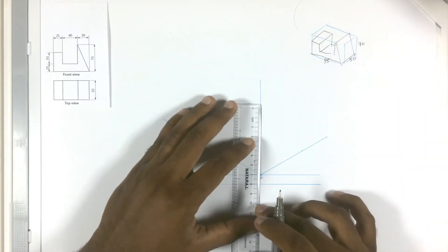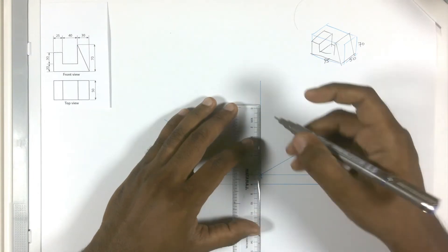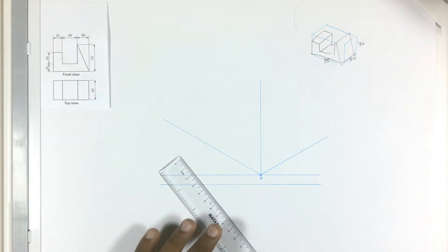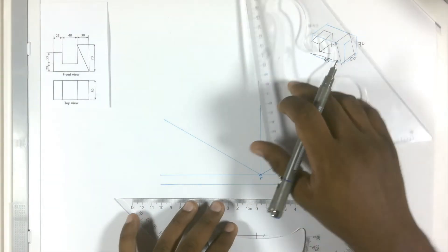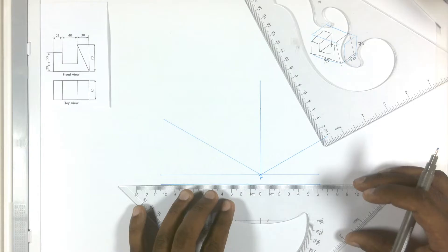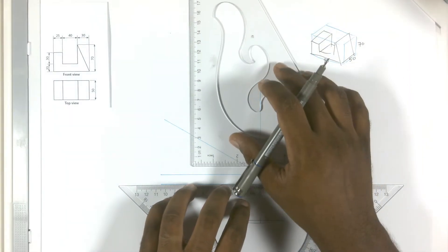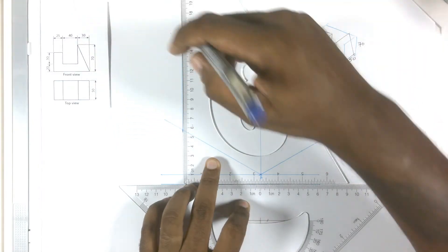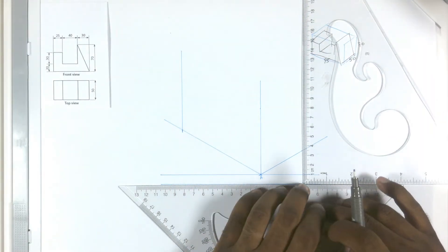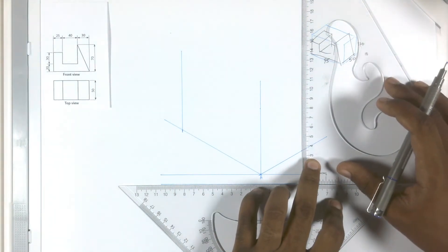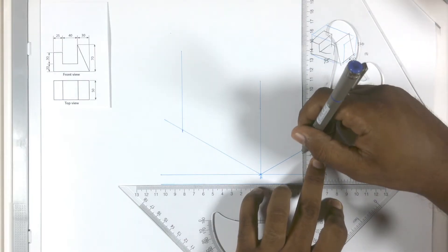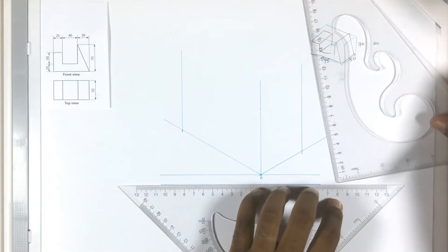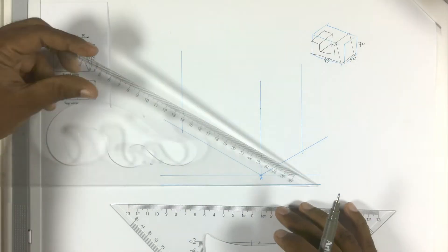And finally the height. The height is 70, so 7 centimeters. Let me add a dot. Now let me draw the verticals first. Now let me complete the crate.